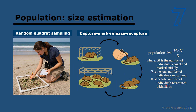There are several assumptions in this method. There must be no migration in or out of the population, and there cannot be deaths or births. The marked individuals need to have the same chance of being captured on the second occasion, so the mark cannot be too obvious. Marks cannot be removed, and marks should not increase the chance of predation — they need to be quite inconspicuous. Remember all of this; it was in the specimen paper.